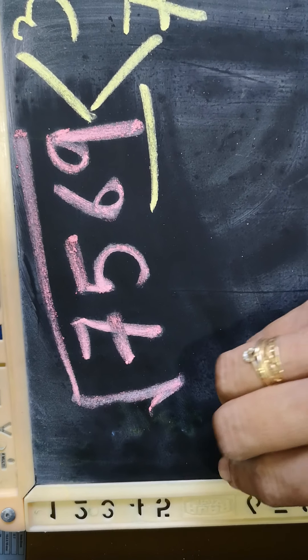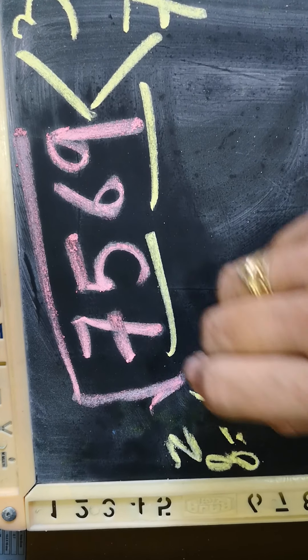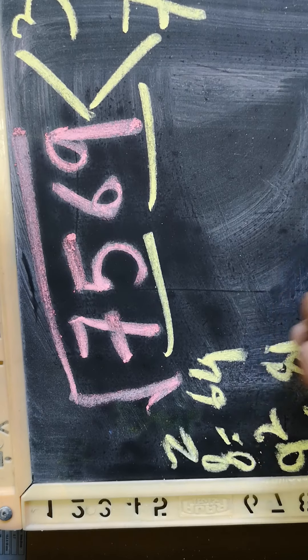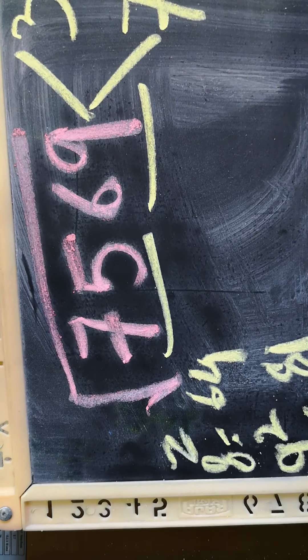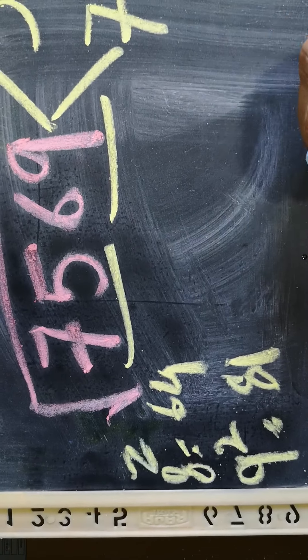For this, what we will do is 8 square is 64, 9 square is 81. Do you agree with this? Are you understanding, is this easier?